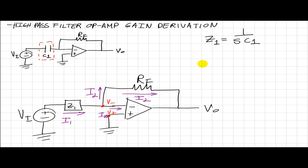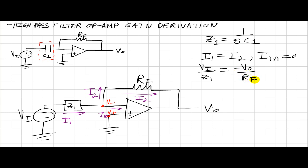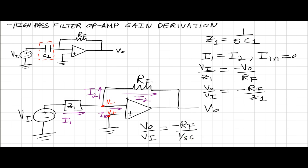From the formulas we know that i1 is equal to i2, since i_in is equal to 0. i1 is equal to vi over Z1, and i2 is equal to negative v_out over Rf. So for v_out over vi, we end up with negative Rf over Z1. Since Z1 equals 1 over s*C1, this reduces to negative Rf times s*C1.